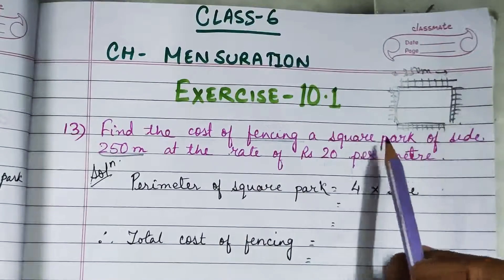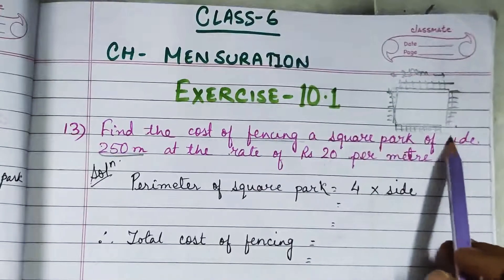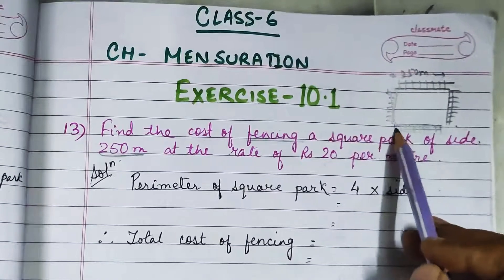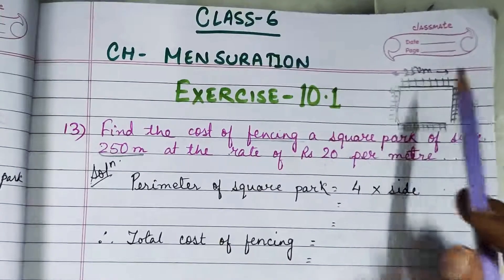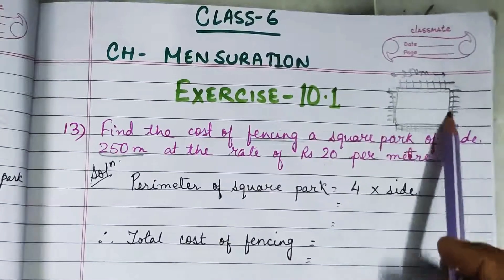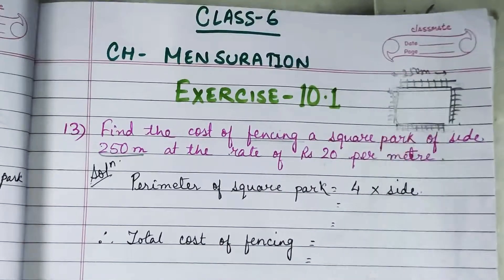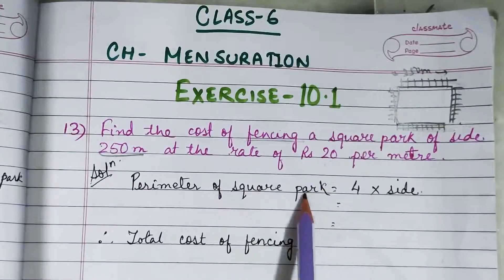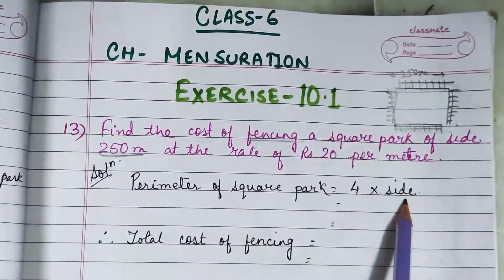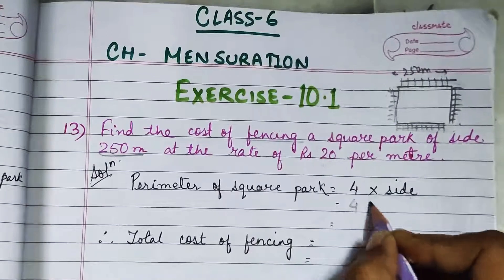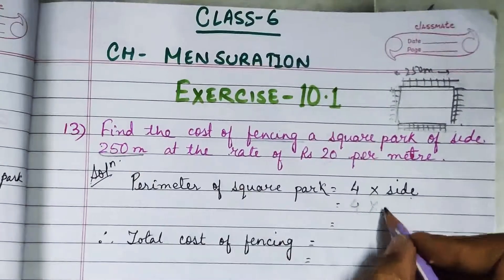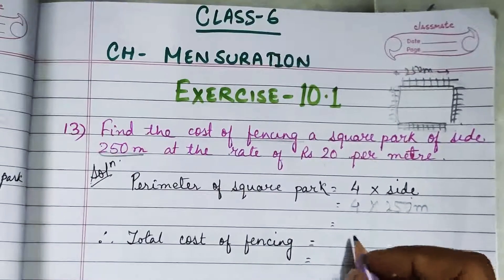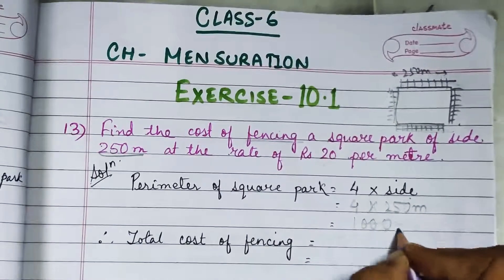This fence has been put on all the sides of the square, so the length of this fence will be equal to the perimeter of the square. The perimeter of the square park equals 4 into side, and side is given as 250 meters. On multiplying, you get 1000 meters.